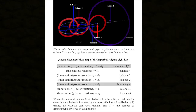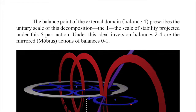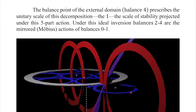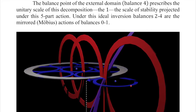The union of balance 0 and balance 1 defines the internal double-cover domain, and balance 4 — created by the union of balance 2 and 3 — defines the external split-cover domain. D sub k is equal to the number of derangements involved in each balance. This whole system is a derangement balance: any action or rotation or geometric distortion made has to be countered exactly somewhere else. If one partition happens, it must be closed collectively somewhere else. The balance point of the external domain prescribes the unitary scale of this decomposition — it literally defines the 1, the scale of stability projected under the five-part action.